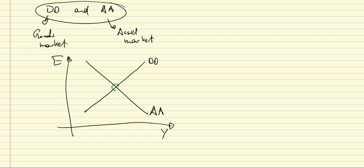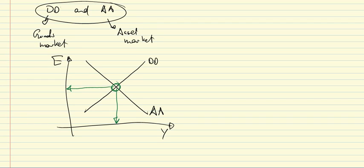Taken all together, we have an equilibrium where both goods and financial markets are in equilibrium. To make that perfectly clear: at one point on the AA curve, the asset market is in equilibrium but the goods market is not, whereas at a point on the DD curve, the goods market is in equilibrium but the asset market is not. Only at E* and Y* — where the two curves intersect — are all markets in equilibrium: the domestic money market, the domestic bond market, the foreign exchange market, and the goods market.